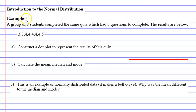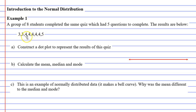In this video, we're going to complete example 1. It says that a group of 8 students completed the same quiz, which had 5 questions to complete. The results are below: 2 students got 3 out of 5 questions correct, 5 students got 4 out of 5 questions correct, and only 1 student got all the questions correct.